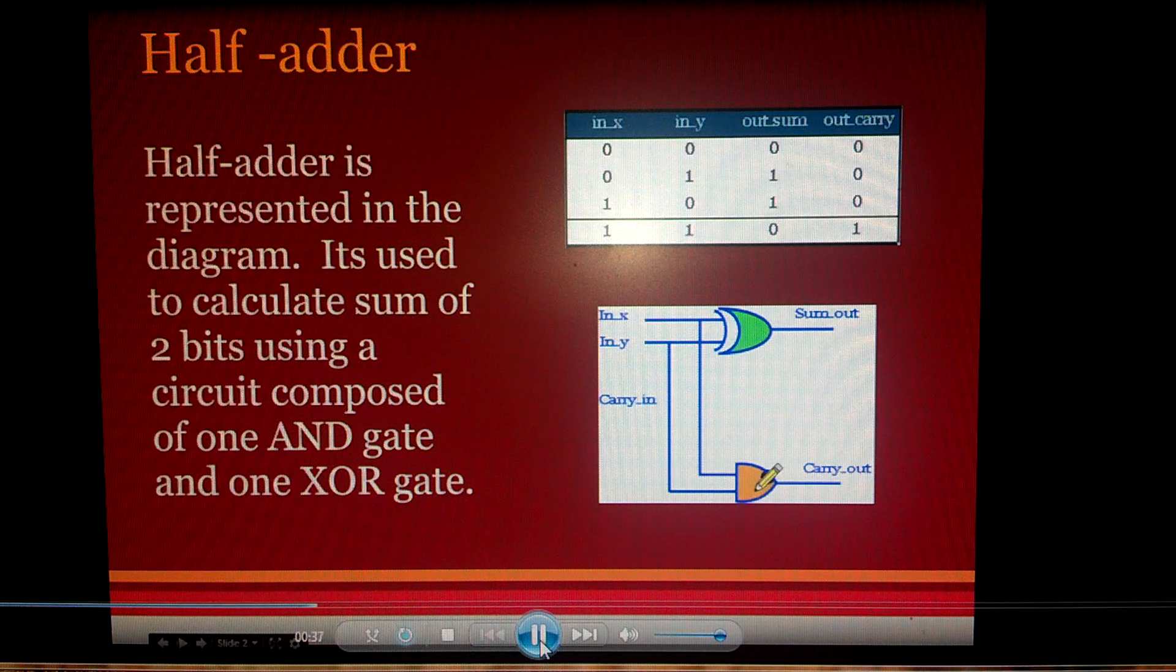The XOR gate takes inputs x and y and generates the sum. Whenever both bits are different, the sum is going to be one.